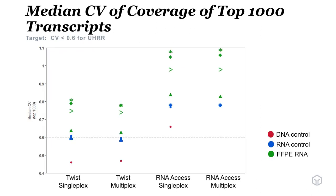The next metric was the median coefficient of variation of coverage of the top 1,000 transcripts. Ideally this should be close to zero; our target was a CV of less than 0.6 for UHRR. The TWIST multiplex and singleplex both met this metric — the Horizon FFPE is slightly above 0.6, but UHRR, shown as the horizontal blue rectangle, is within target. It's not surprising that there's more variation in coverage in FFPE samples than in UHRR. RNA Access was unable to meet this target performance with both control samples and FFPEs.